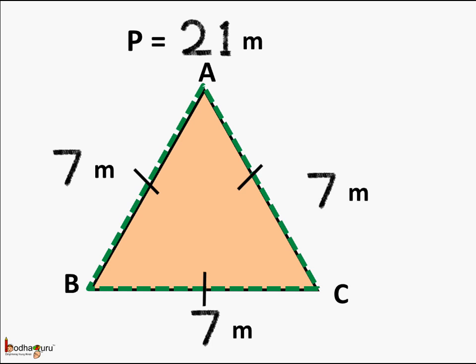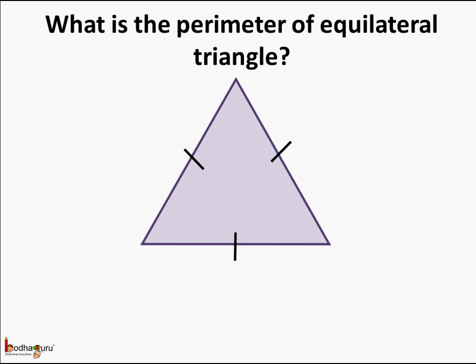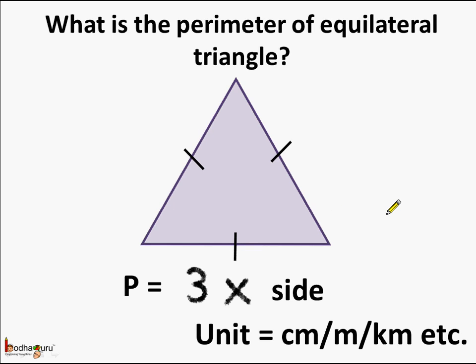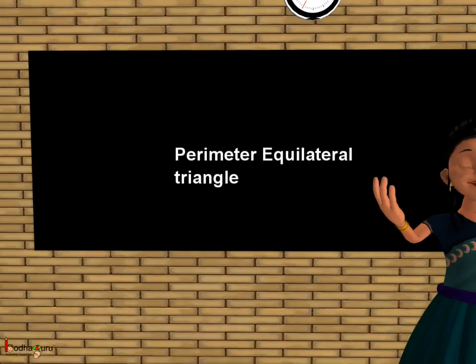So what did we learn here? Remember that the perimeter of an equilateral triangle is equal to 3 times the side length, as all three sides are of equal length, and the unit could be anything — meter, centimeter, kilometer, etc. Now you know how to find the perimeter of an equilateral triangle if you know the length of the side.